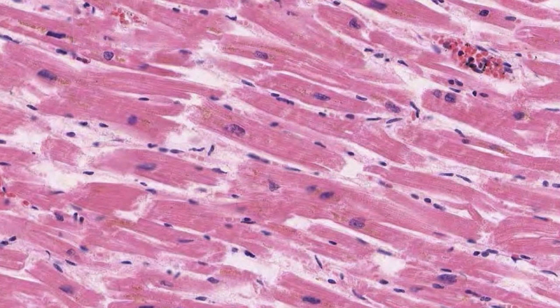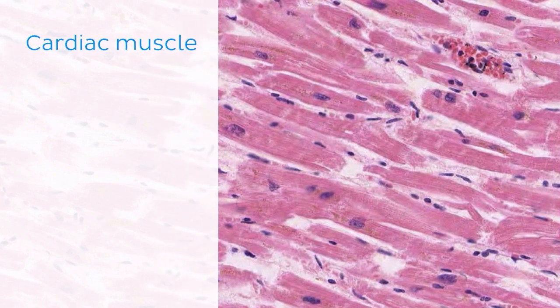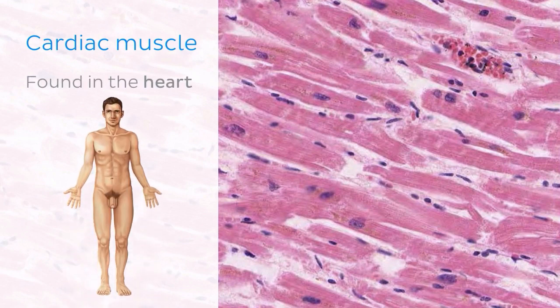The second type of muscle found in the human body is cardiac muscle tissue, an example of which is seen here in this micrograph. As the name suggests, this type of muscle tissue is found in the heart. The highly synchronized muscle contraction of the cardiac muscle cells transforms the heart into a pump which sends blood throughout the body.